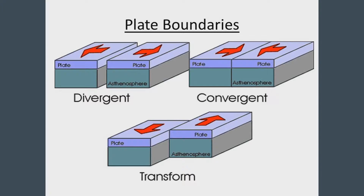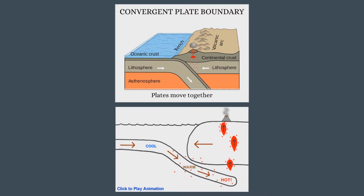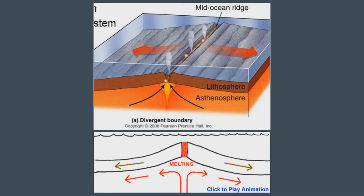There are three types of plate boundaries: divergent, convergent, and transform. Volcanoes can occur at both convergent and divergent plate boundaries, but mostly at convergent boundaries due to the movement of the plate. A convergent plate is where two plates are moving toward each other, and if they are of unequal density, one plate usually sinks beneath the other in a subduction zone. A divergent plate is when plates move away from each other, most likely to happen under the mid-ocean ridge and a rift valley, allowing the inside to come out.